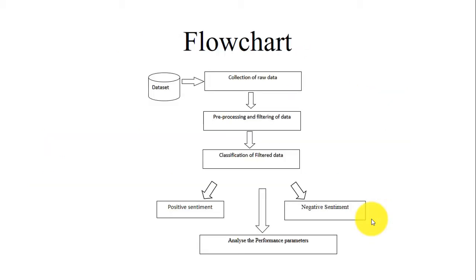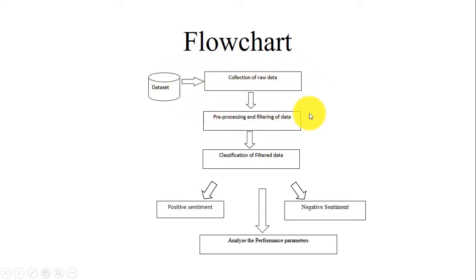The flowchart of the whole work starts with collection of data. For movie reviews, we considered data from the IMDB online movies review site. First, we collected the raw data and after that used a pre-processor to filter that data. Movie reviews are sentences, and we need to break down those sentences into a bag of words. After that, the filtered data is classified using random forest into positive or negative sentiment, and then we analyze the performance parameters.